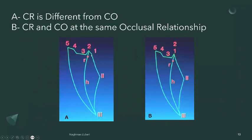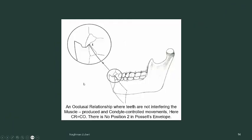As mentioned, most of the population has a shift from centric relation to maximum intercuspation. If we look at the posselt envelope, we will find this line. Ideally, there must not be any shift — position one and position two should be overlapping, meaning at centric relation the person would be closing the jaw without any interference and there won't be any shift. An occlusal relationship where teeth are not interfering with muscle-produced and condyle-controlled movements means centric relation and centric occlusion would be coinciding — only the teeth going into maximum intercuspation, with no second position in the posselt envelope.